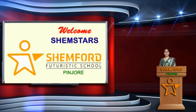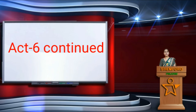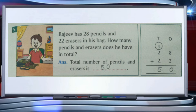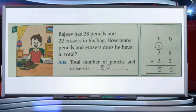Good morning students, welcome to mathematics class. Today we will continue activity six. In activity six, question number five is: Rajiv has 28 pencils and 22 erasers in his bag. How many pencils and erasers does he have in total? That means we have to find the total number of pencils and erasers.